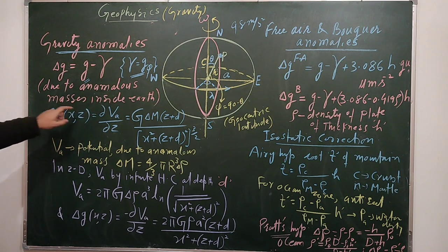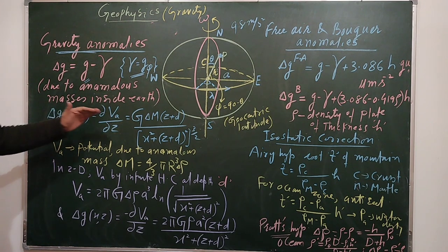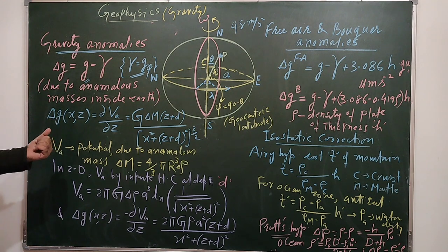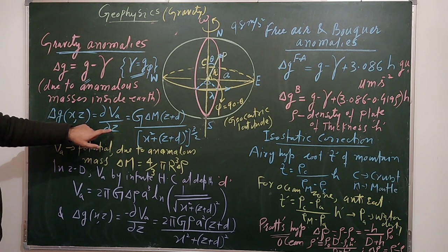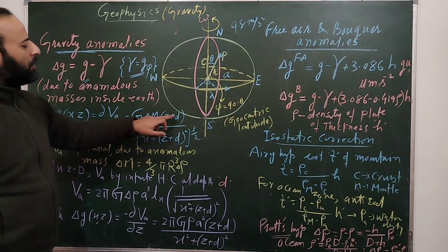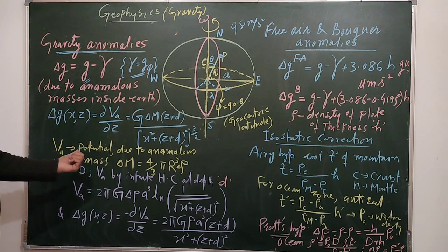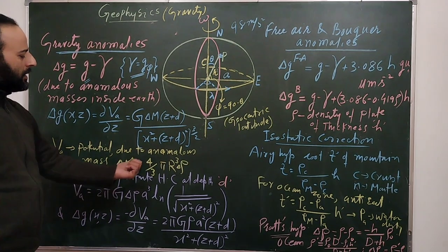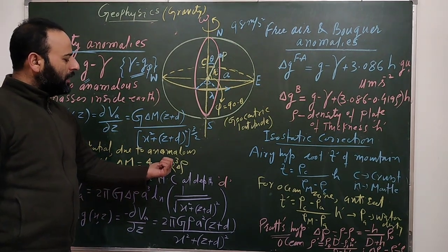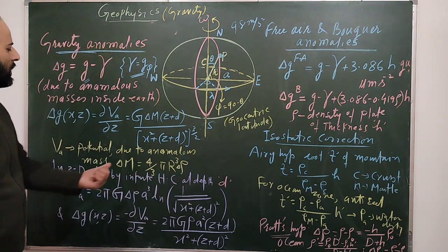Due to anomalous masses inside the earth, if we go a horizontal distance x and depth z, the gradient of the anomalous potential Va is equal to G·ΔM·(z + d) divided by (x² + (z + d)²)^(3/2), where the anomalous mass ΔM equals (4/3)·π·r³·Δρ, and Δρ is the anomalous density.